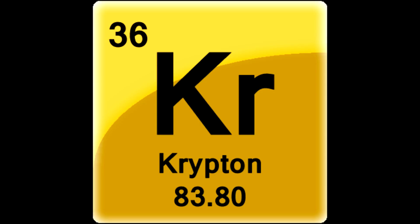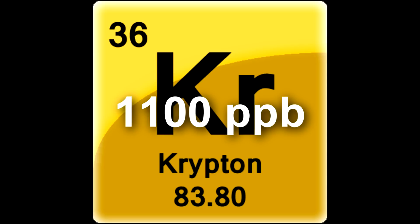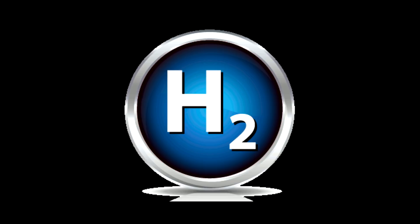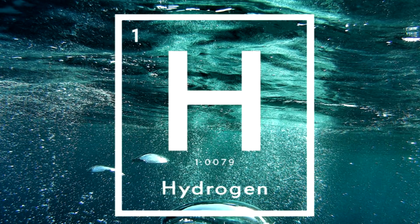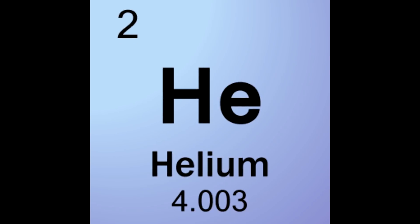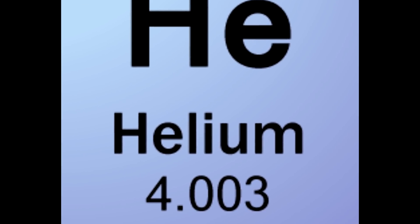Below methane we have another unreactive noble gas called krypton at 1,100 parts per billion. Then at 550 parts per billion we have H2, or hydrogen. Hydrogen is incredibly trace — 550 parts per billion is equal to about 0.000055% of the air. Hydrogen is this trace for two reasons: first, it is very reactive and will bind with oxygen in the air to form water; and second, like helium, it is so light it simply floats out into outer space.